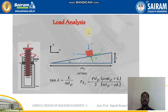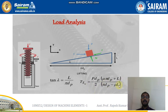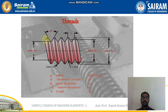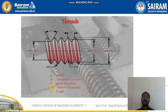For the load analysis under the lifting condition, tan λ = l/(π·dp). The torque formula is: T = (p·dp/2) multiplied by (μ·π·dp + l) divided by (π·dp − μ·l). Here, p is the pitch in inches or mm, d is the major diameter, dp is the pitch diameter, and dr is the minor diameter. These can also be referred to as d1, d2 depending on the reference used. l here is the lead.